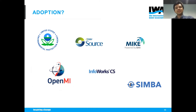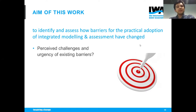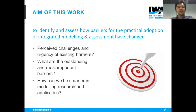From 20 years on since that 1993 paper, how have these barriers changed? As part of the working group, we got together with the aim of understanding how these barriers have changed and if there are any new ones. The focus was really looking at what are currently the perceived challenges and urgency of these existing barriers, what are the outstanding and most important barriers we still face today in practice, and how can we be smarter in the modeling research and application.